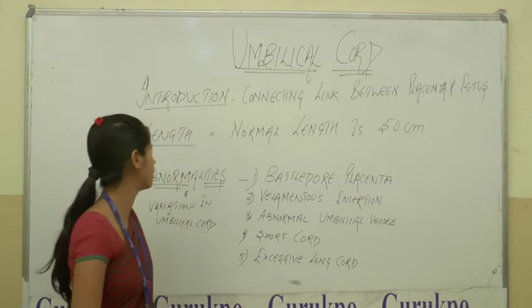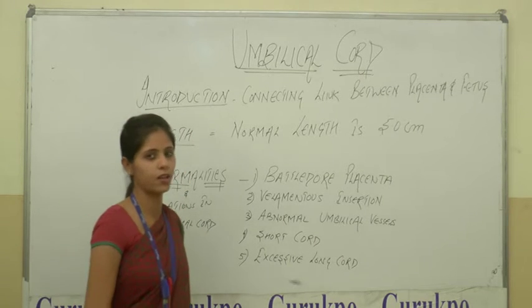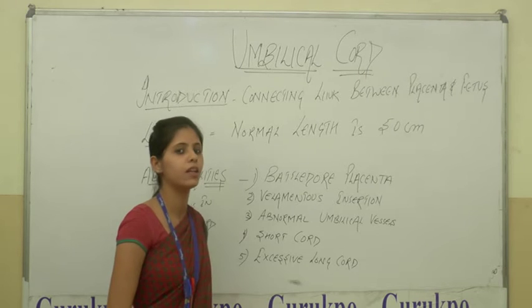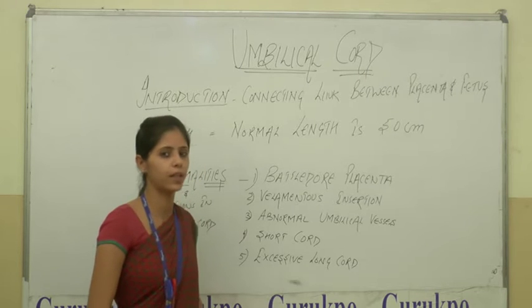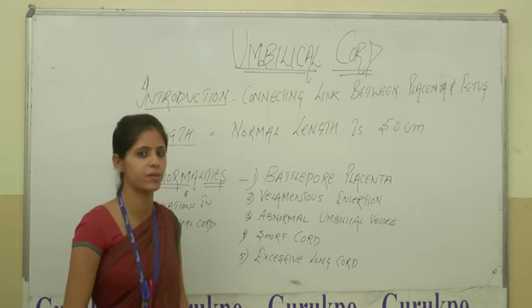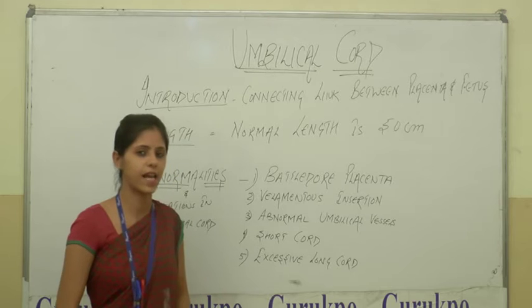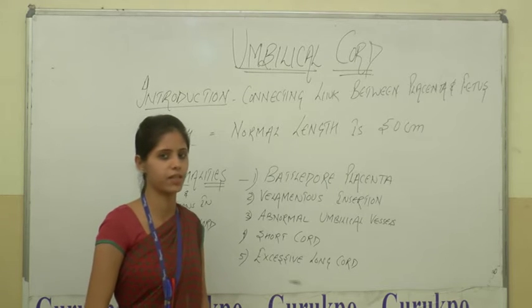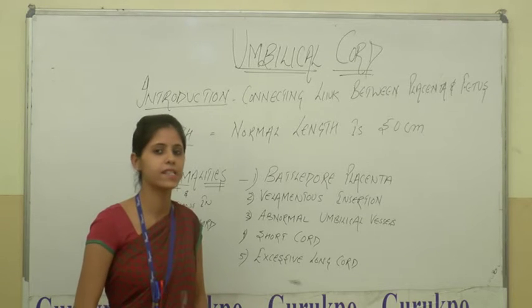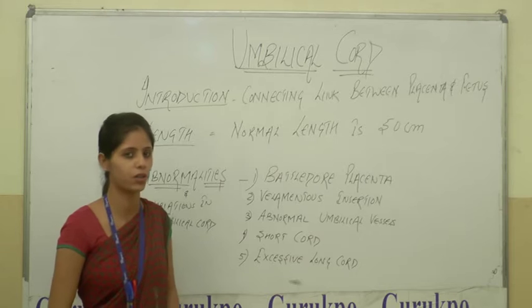Next we move on to the length of the umbilical cord. Normal length of the umbilical cord is about 50 cm. If its length is less than 40 cm, then it is considered as a short cord.